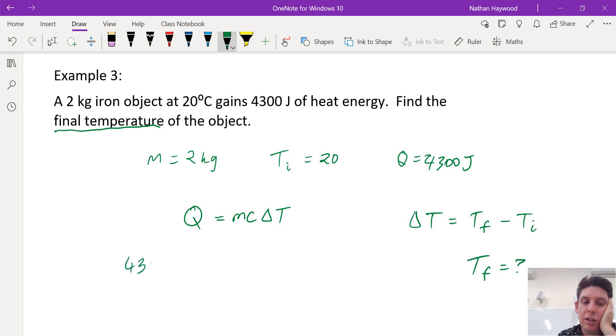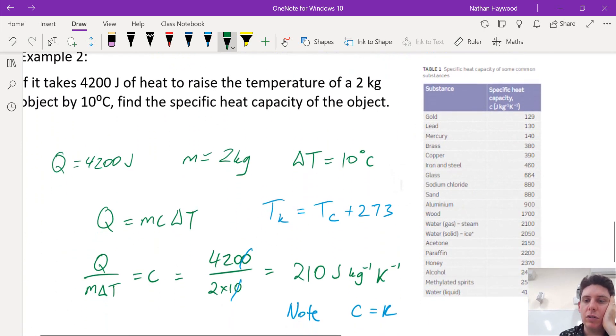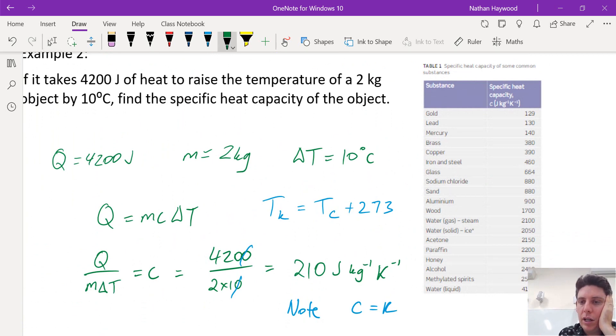All right, so we can substitute everything in and then try and find the final temperature. So we got Q equal to the mass. I might just get rid of units to stop confusing people. All right, so it hasn't given us C, an iron object, so we have to look this up. Iron, according to the table, is 460.